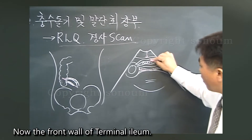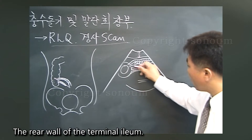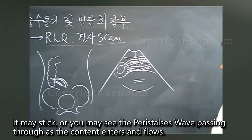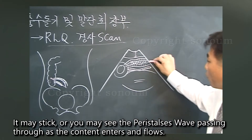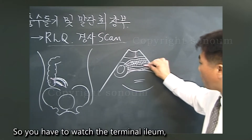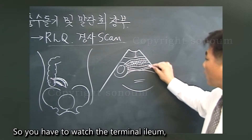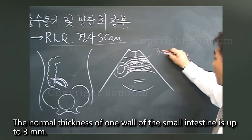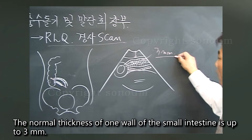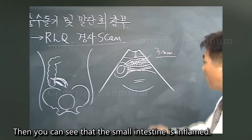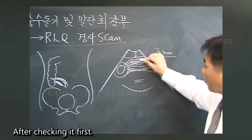The front wall and rear wall of the terminal ileum are visible, with the shaded part in the middle being the lumen. You may see peristalsis waves passing through as content flows. The normal thickness of one wall of the small intestine is up to three millimeters; if it exceeds three millimeters, it can be called inflammation.